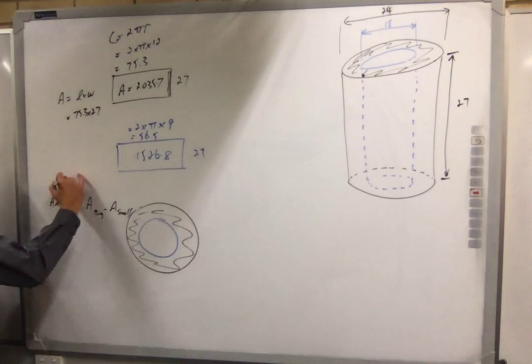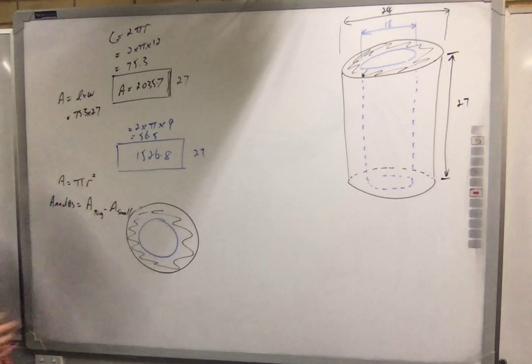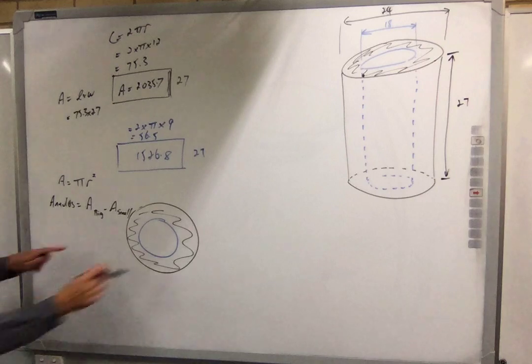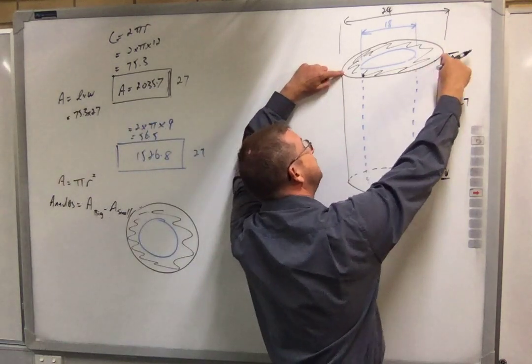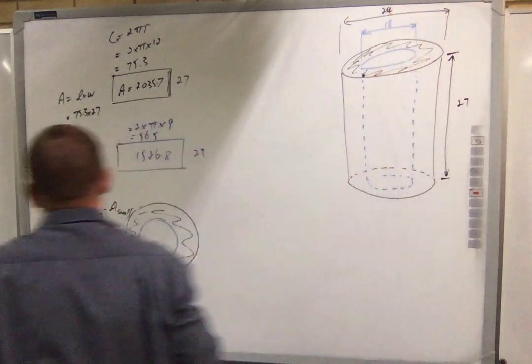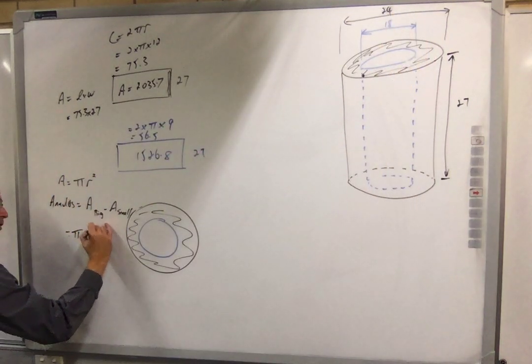And area of the circle is pi r squared. Let's just go with the big circle. What's the radius of my big circle? This is my big circle. What's my radius? 12. So this is going to be pi times 12 squared.